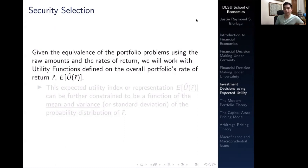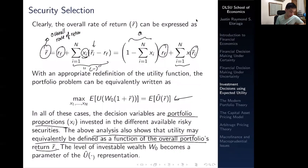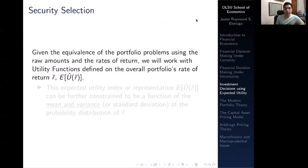What we're going to show in this video is that all of these decisions converge to a mean and variance representation, which means a lot in financial economics. Given the equivalence of the portfolio problems, we can boil down a portfolio problem and think of it using rates of return. Starting with raw amounts, we convert into rates of return.